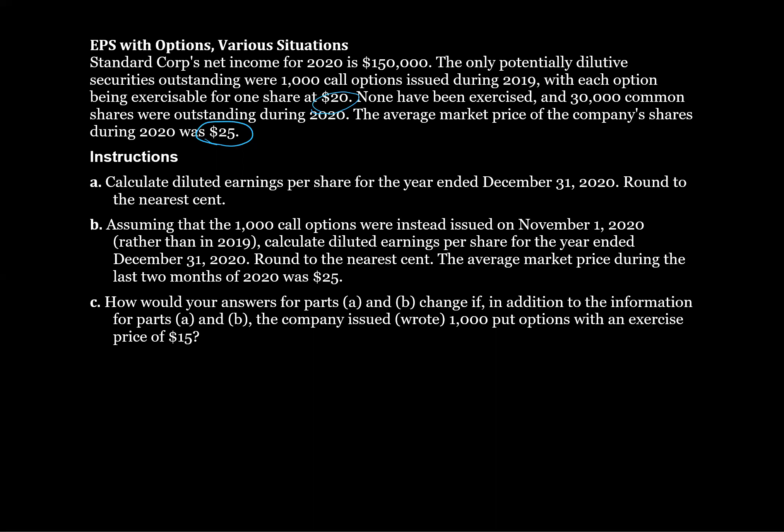However, given that they can buy at $20 and sell at $25, we assume it will be exercised for the calculation of diluted earnings per share. What if the option could be exercised at $30 and the market price was $25? Well, that option is not in the money. No one's going to pay $30 for stock they could buy for $25, so we wouldn't include that in our diluted EPS calculation. But in this situation, it is in the money, so we will include it.